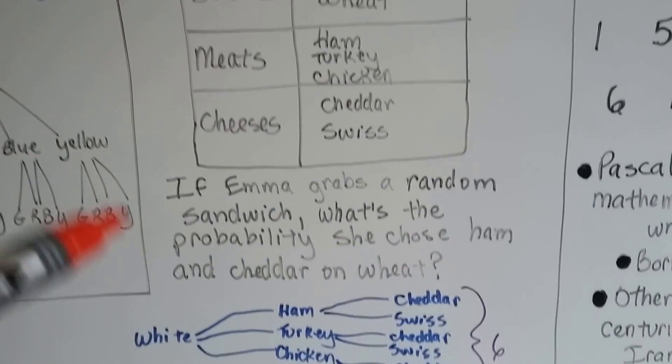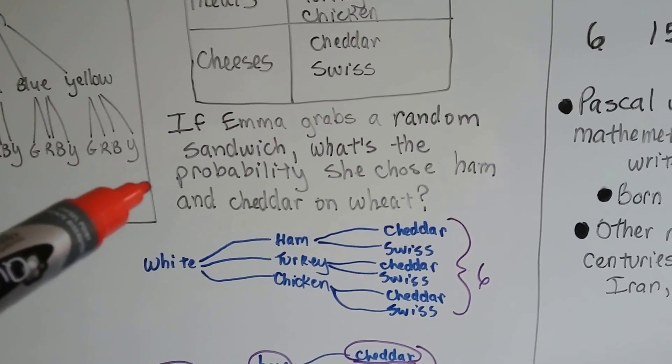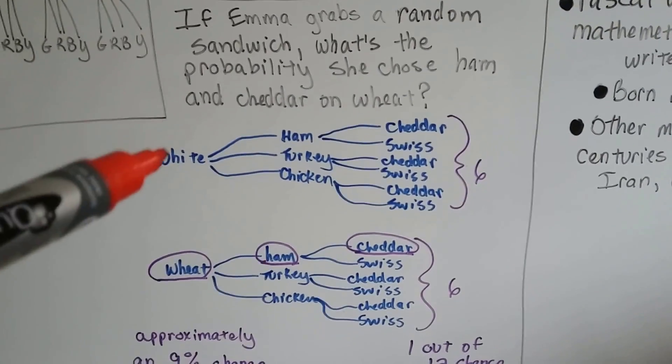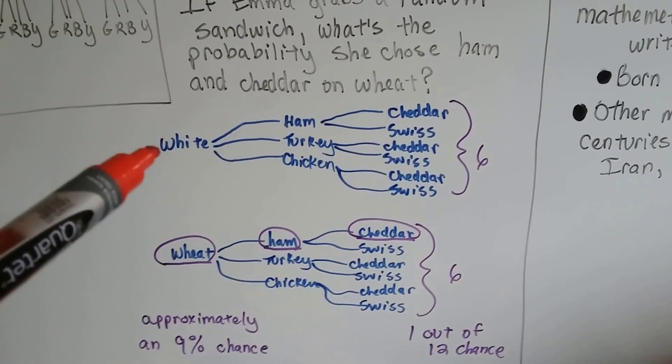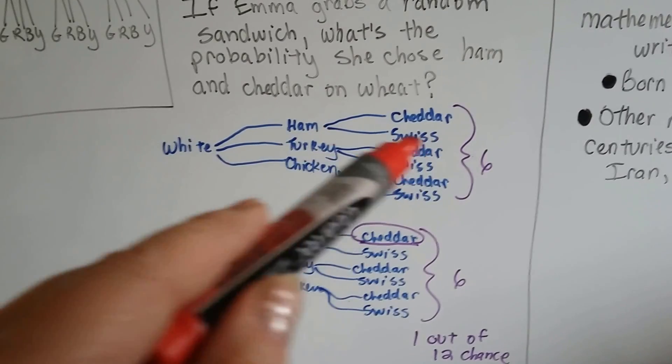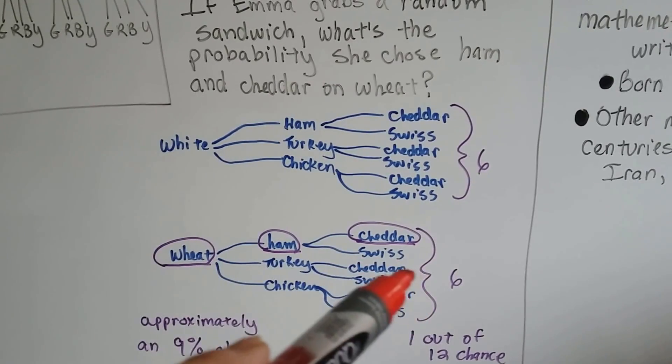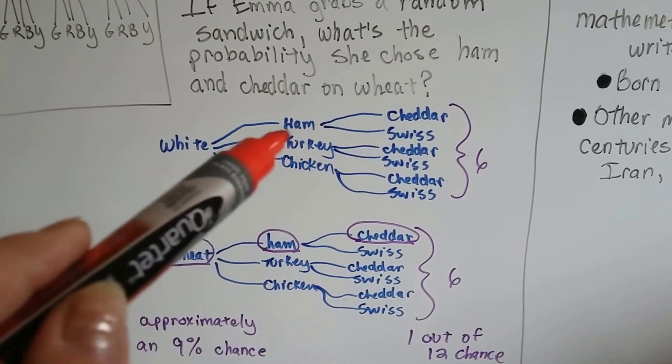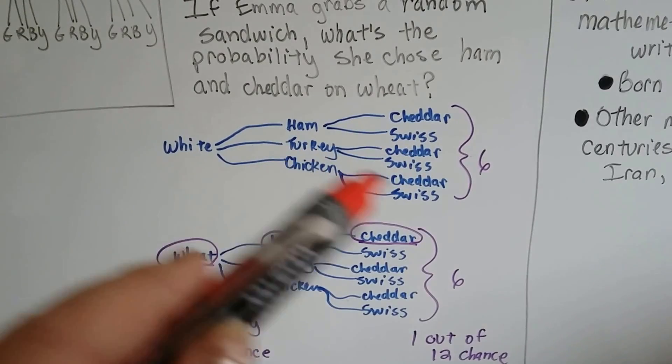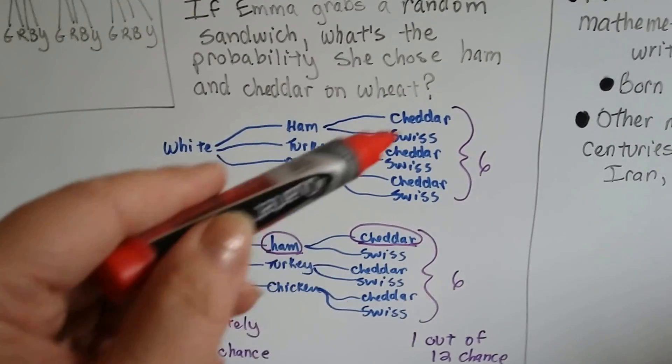So, Emma grabbed a random sandwich. What's the probability that she chose a ham and cheddar on wheat? Well, here's all the white possibilities, and here's all the wheat possibilities. Ham with cheddar, ham with Swiss, turkey with cheddar, turkey with Swiss. These are all the possibilities.